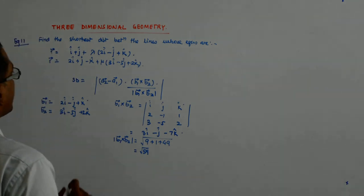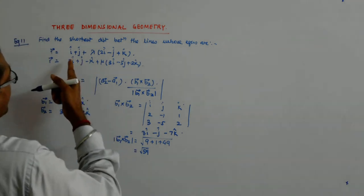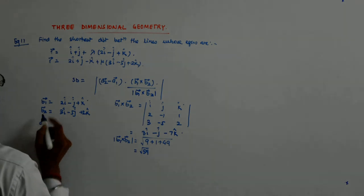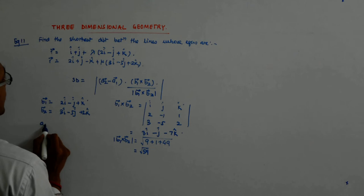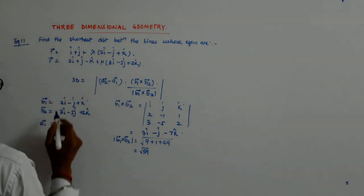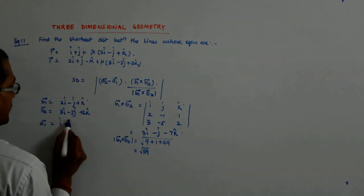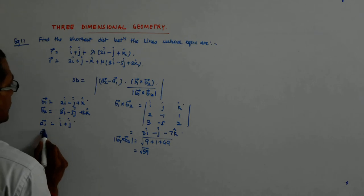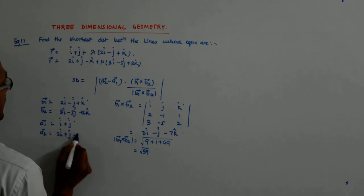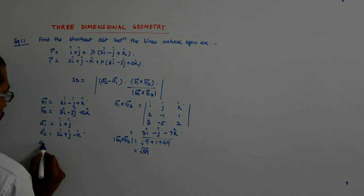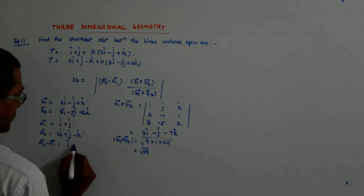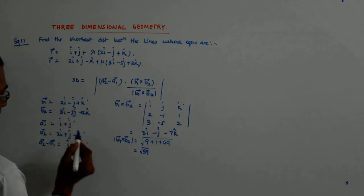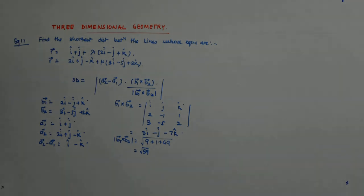Correct. Now, what is A2 minus A1? Now, you have to be also able to realize that. So, I am considering this as the first. So, my A1 is i plus j. A2 is 2i plus j minus k. What is A2 minus A1? Just subtract them. So, I get i cap, j cancels, minus k cap. So, what is A2 minus A1?